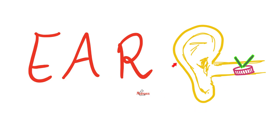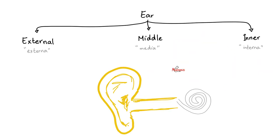A quick review on the anatomy of your ear. Your ear is made of three parts: external ear, middle ear, and inner ear. Otosclerosis is a disease of the middle ear.